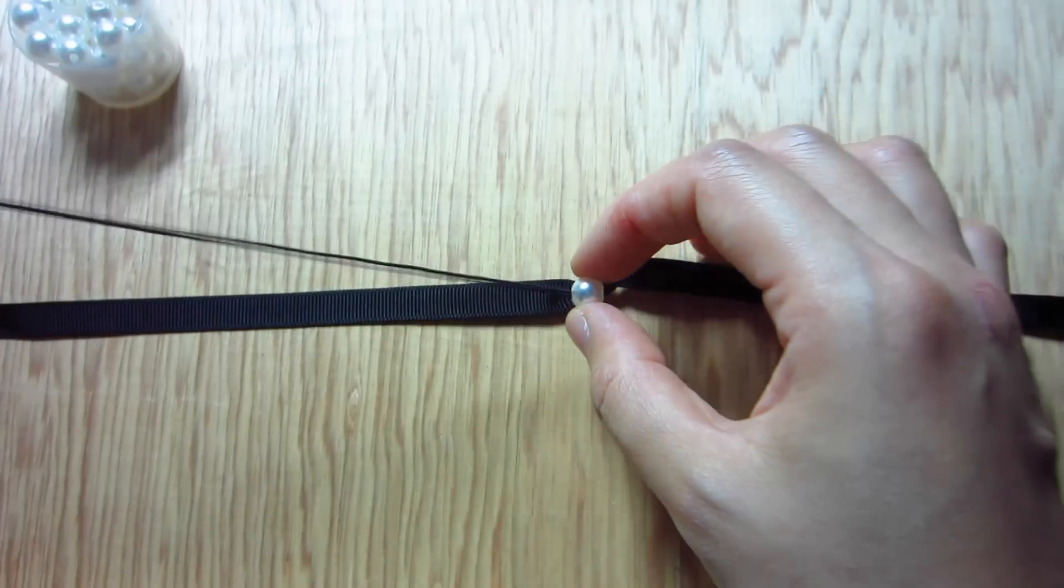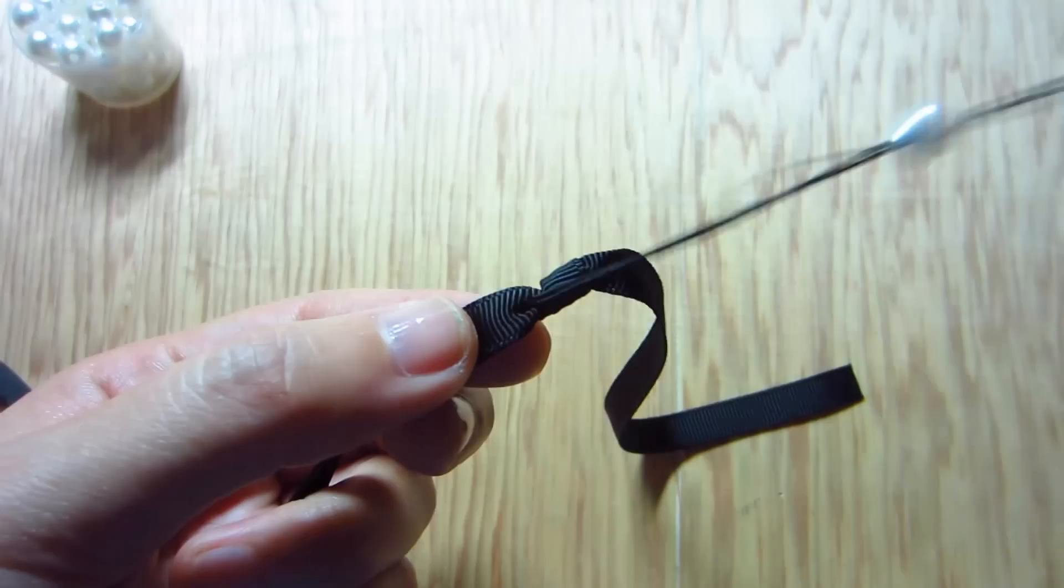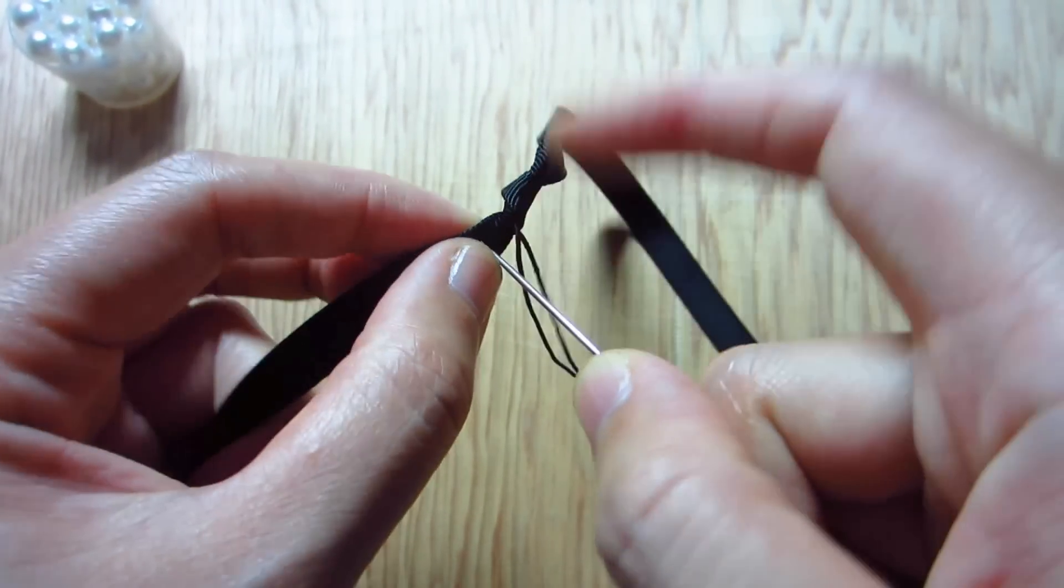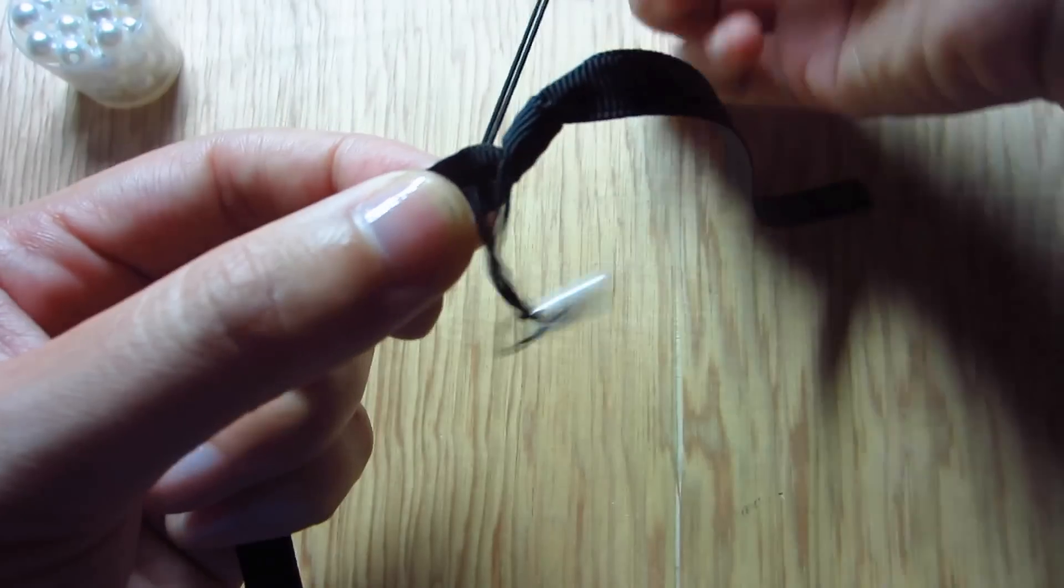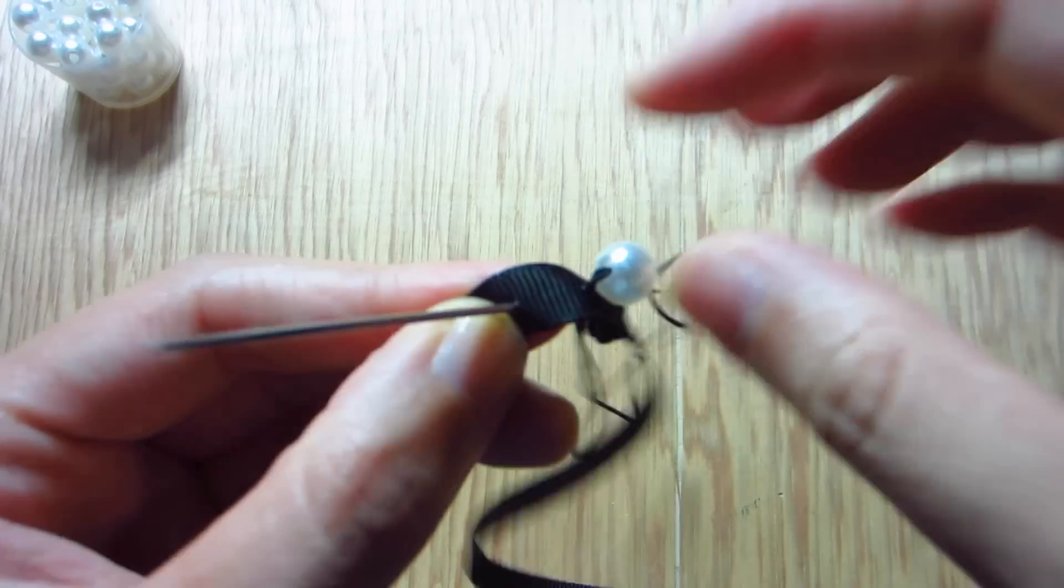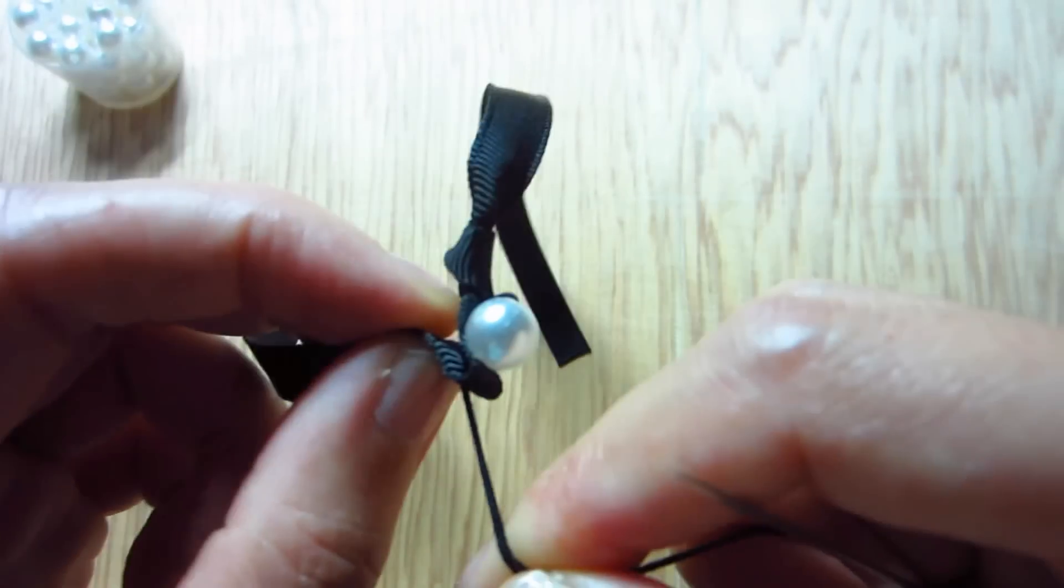Thread the first pearl. Take your needle and go down like I'm doing here. Now bring it back up a half an inch like this. Pull tight.